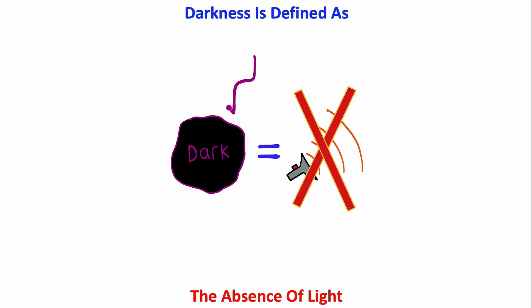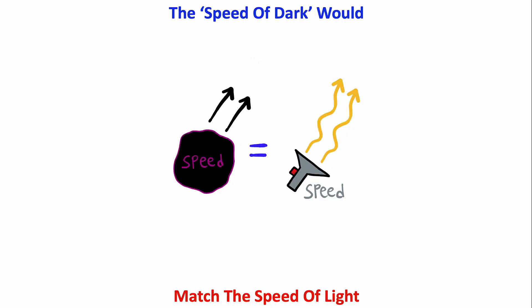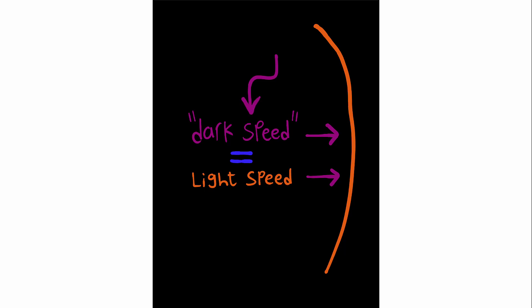So darkness itself doesn't actually exist. But if darkness did have a speed, it would simply match the speed of light since darkness would travel as fast as the last light wave. But keep in mind, in this situation, the darkness is not actually moving.